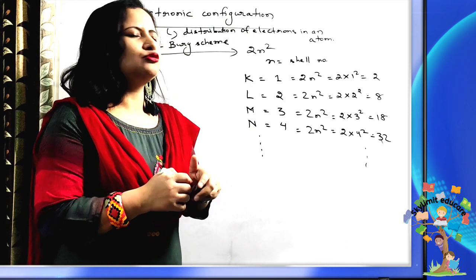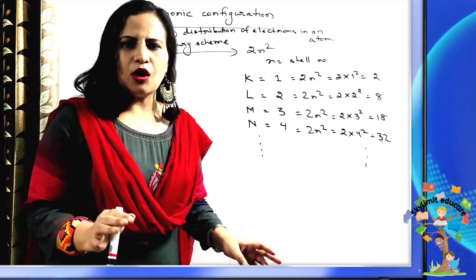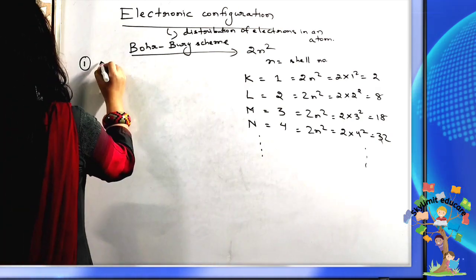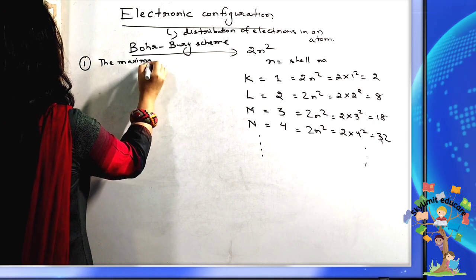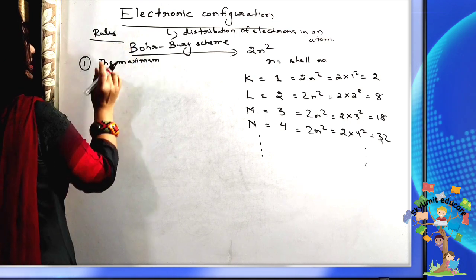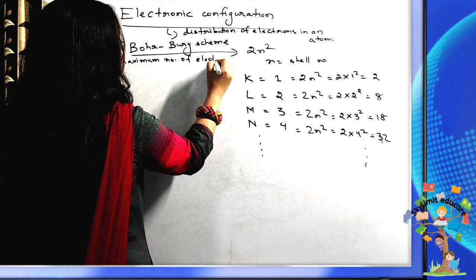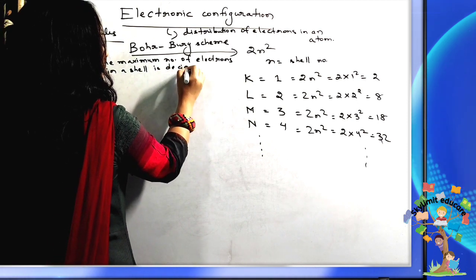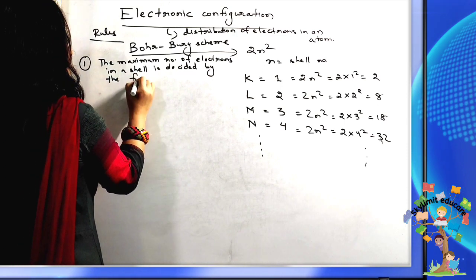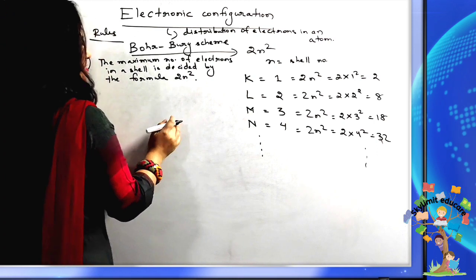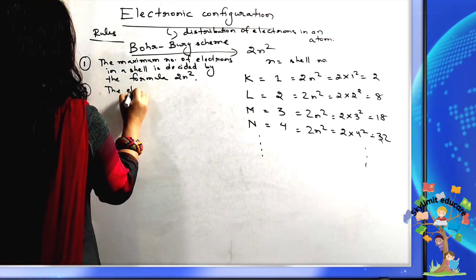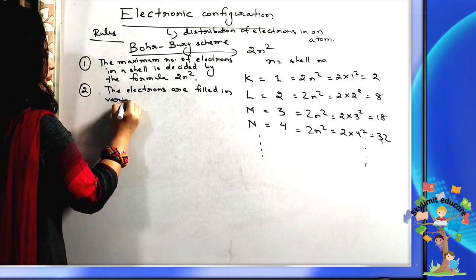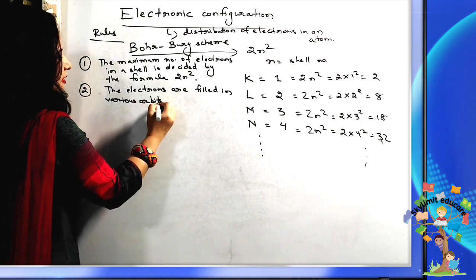By following the Bohr-Bury scheme we can find how electrons are distributed in various shells or orbits. There are three rules for writing the electronic configuration for any atom. The first rule: the maximum number of electrons in a shell or orbit is decided by the formula 2N². The second rule: electrons are filled in various orbits in a step-wise manner.